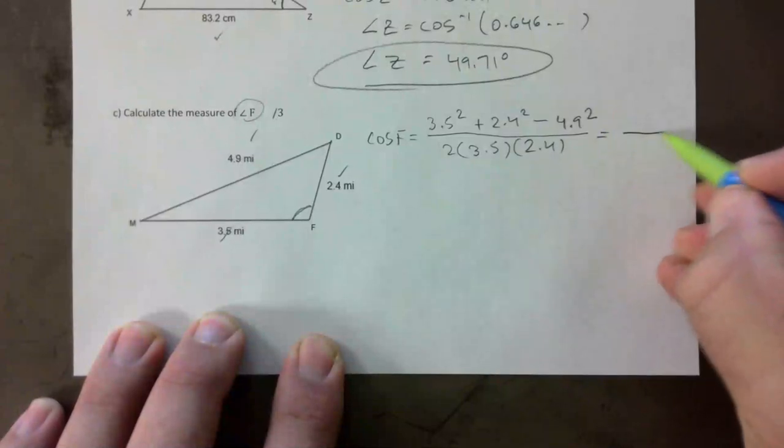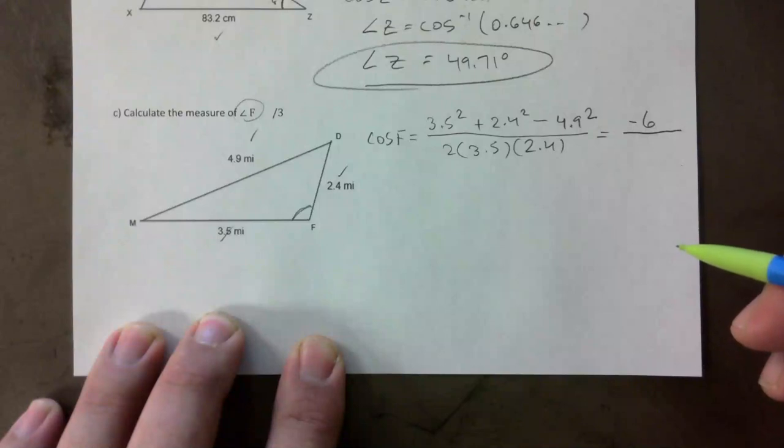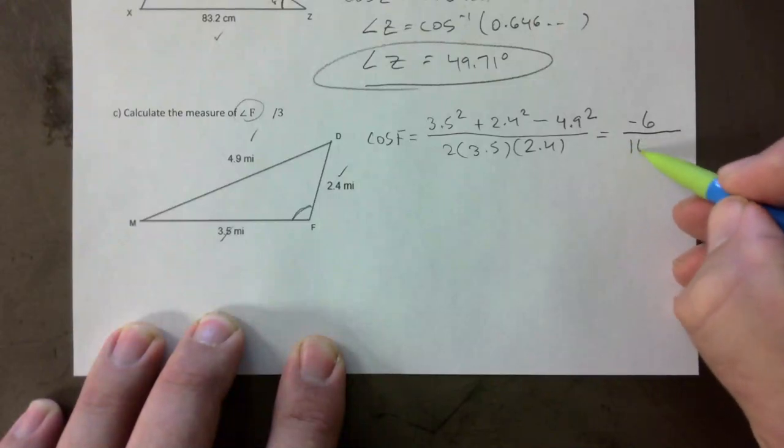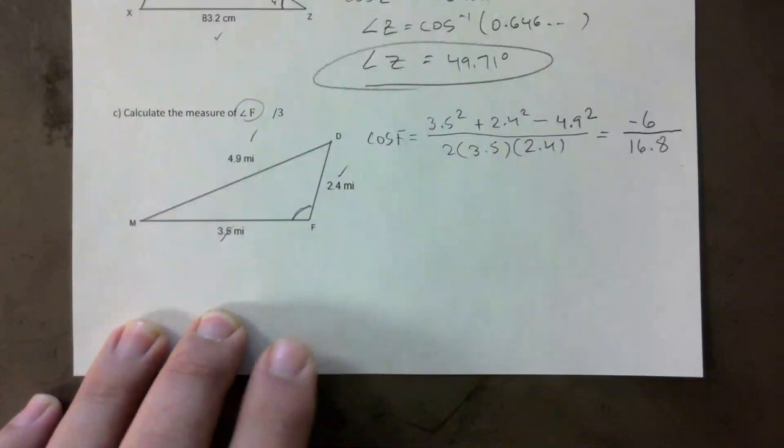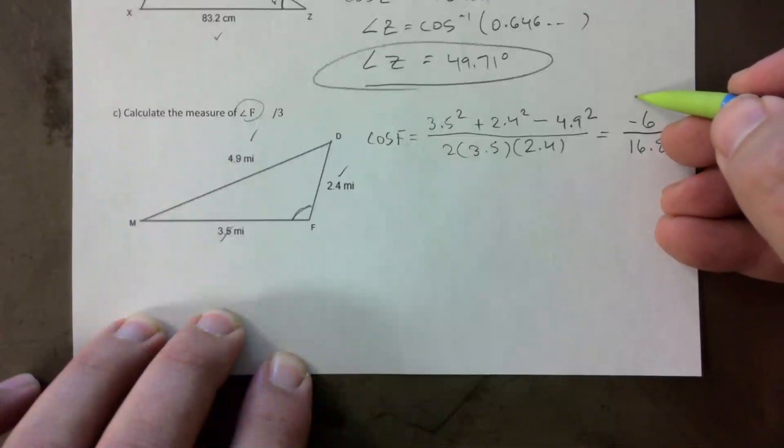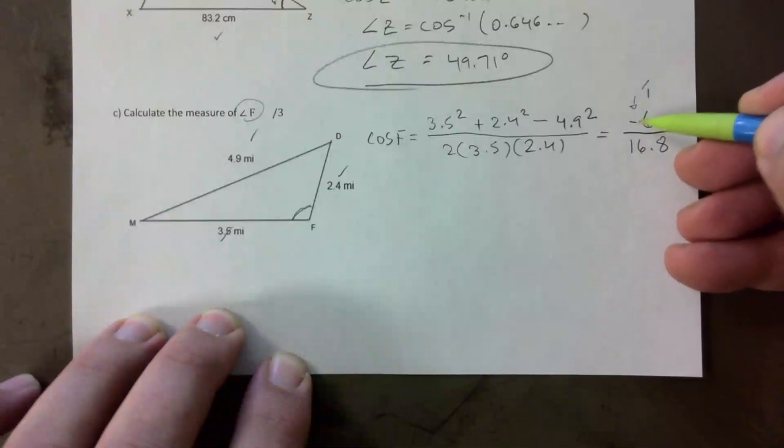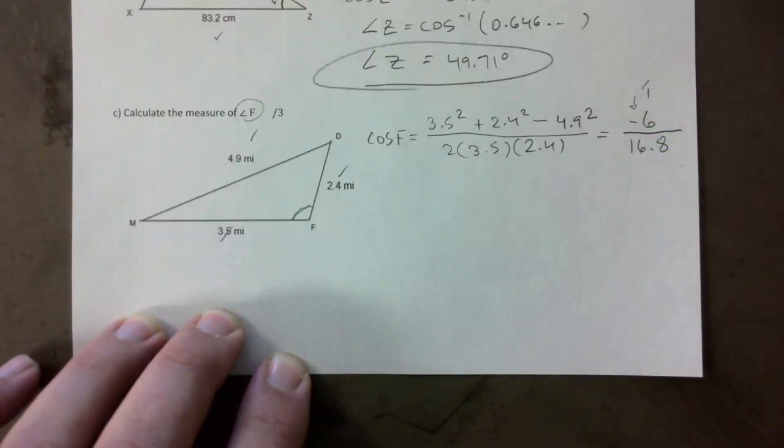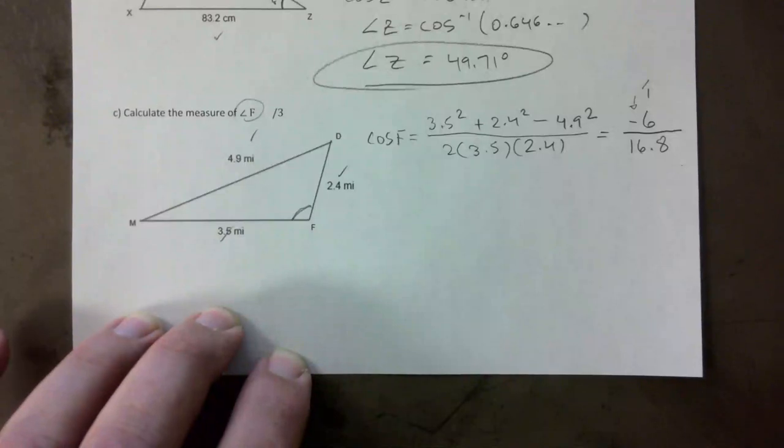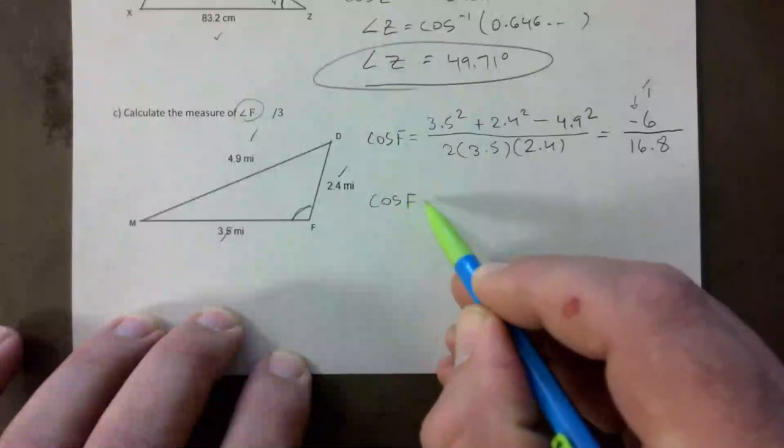There we go. And then the top gives us negative six exactly, which is interesting, and the bottom is 16.8. So one mark for cosine law. I actually give a full mark for that negative. If you don't have the negative, if you dropped it, I would say minus one.